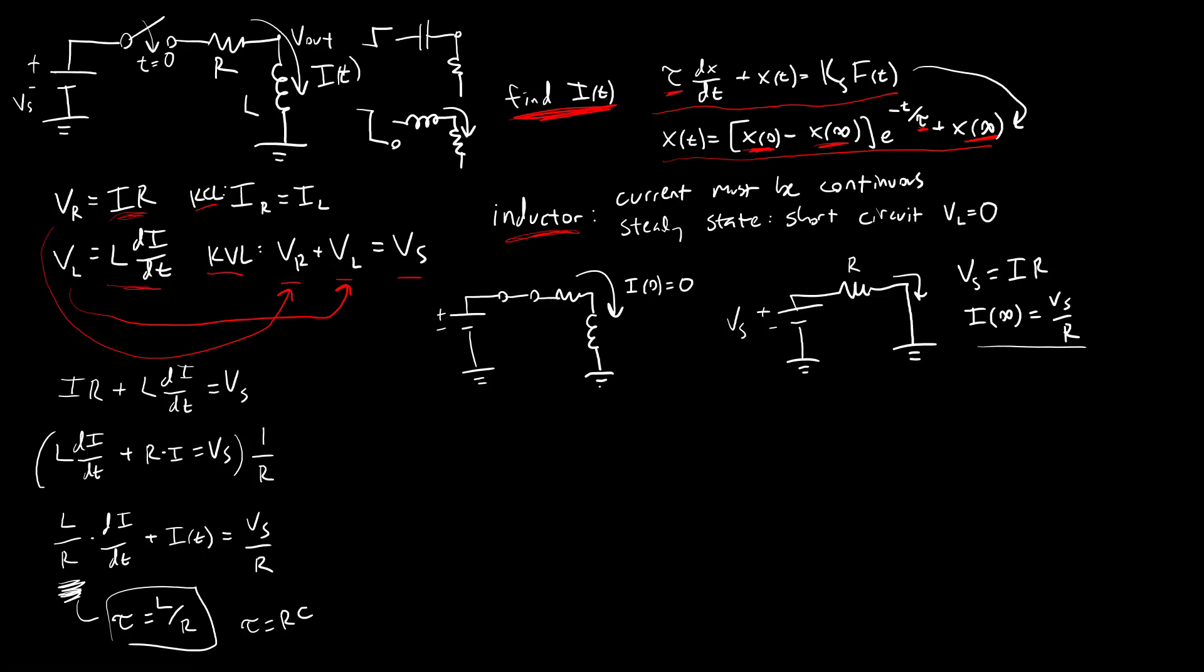There we go. We have our initial condition and our final condition and our time constant. We can go ahead and plug all of those into this equation to get I as a function of time. So we have I of T equals I of zero minus I of infinity, e to the negative T over tau plus I of infinity.